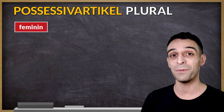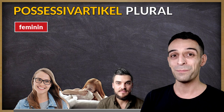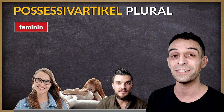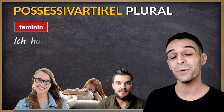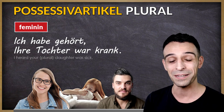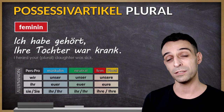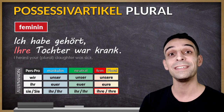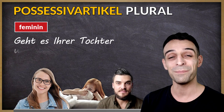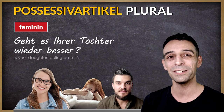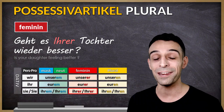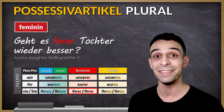In my next sentence, I'm in a conversation, but I'm not close to them — we are not good friends — so I use the polite way to address them. Ich habe gehört, ihre Tochter war krank. Tochter is the subject, feminine, so it's nominative case: ihre. Geht es ihrer Tochter wieder besser? Here, Tochter is in dative case: ihrer.